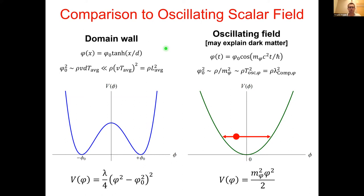To come full circle, we can relate these back-action screening effects for domain walls to what has been studied for oscillating dark matter fields. An oscillating scalar dark matter field phi has an angular frequency set by the dark matter particle mass, with amplitude phi_0 fixed by the local energy density and particle mass — the scalar field amplitude growing with the Compton wavelength. By contrast, the scalar field amplitude for a domain wall grows with the average separation between adjacent cosmological domain walls, though somewhat slower.